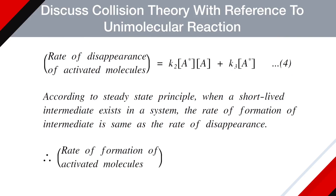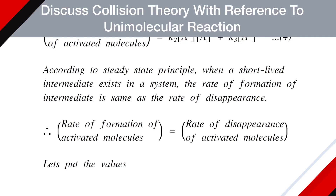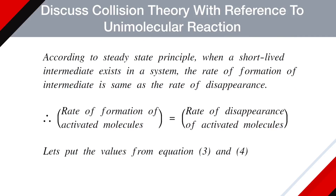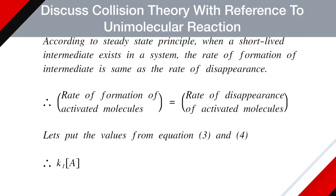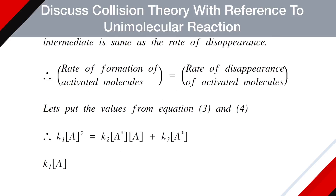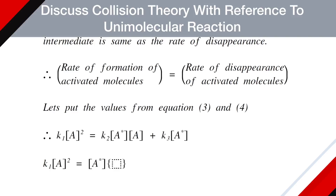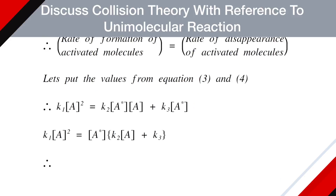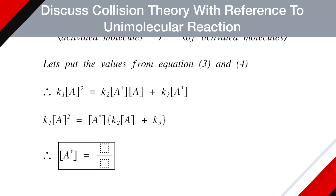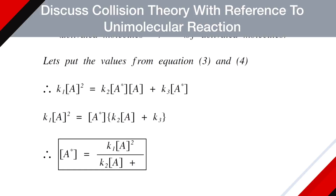Therefore, the rate of formation of the activated molecule equals its rate of disappearance. Substituting from equations 3 and 4: K1[A]² = [A*](K2[A] + K3). Taking [A*] common and rearranging: [A*] = K1[A]² / (K2[A] + K3). This is equation 5.